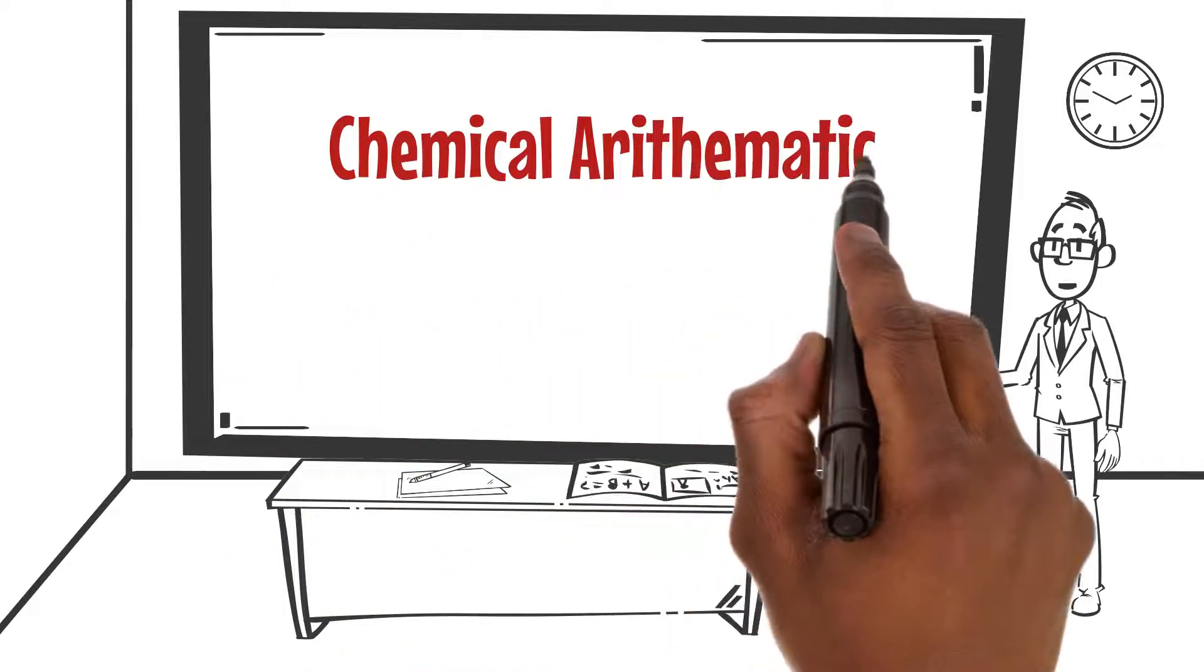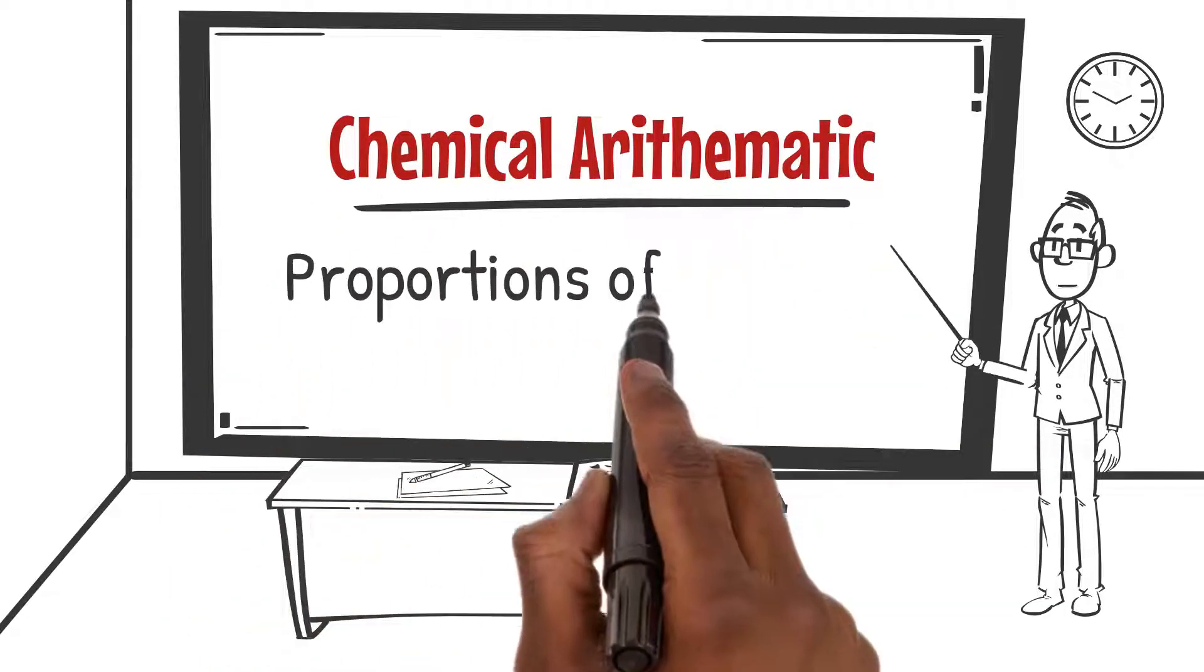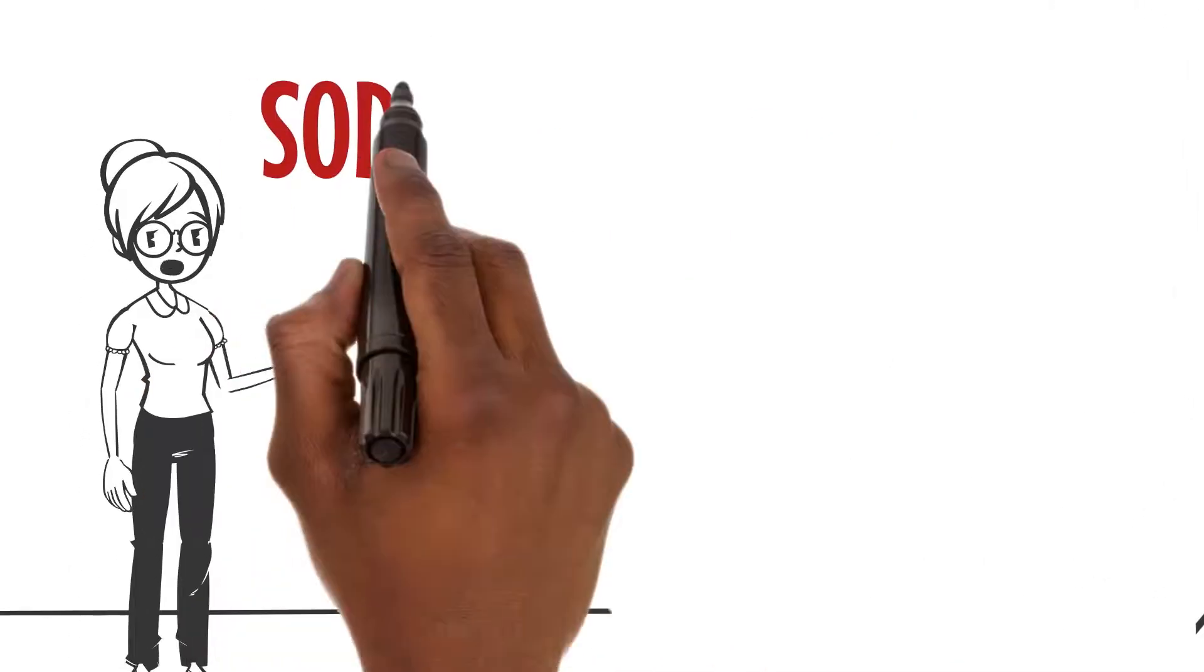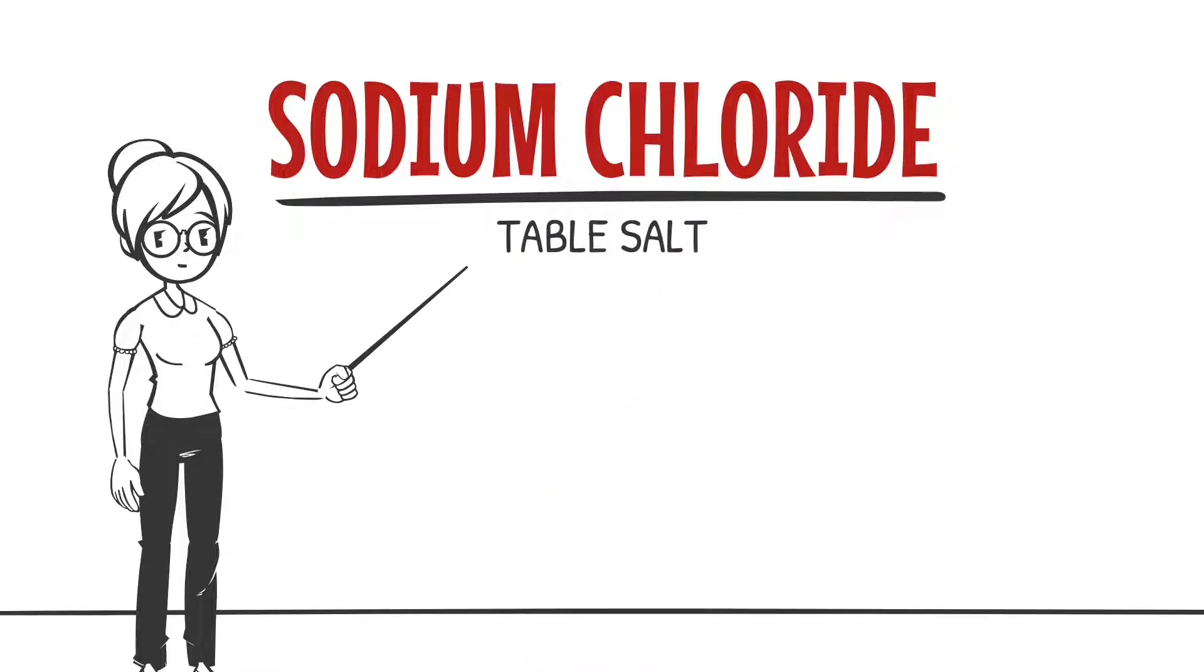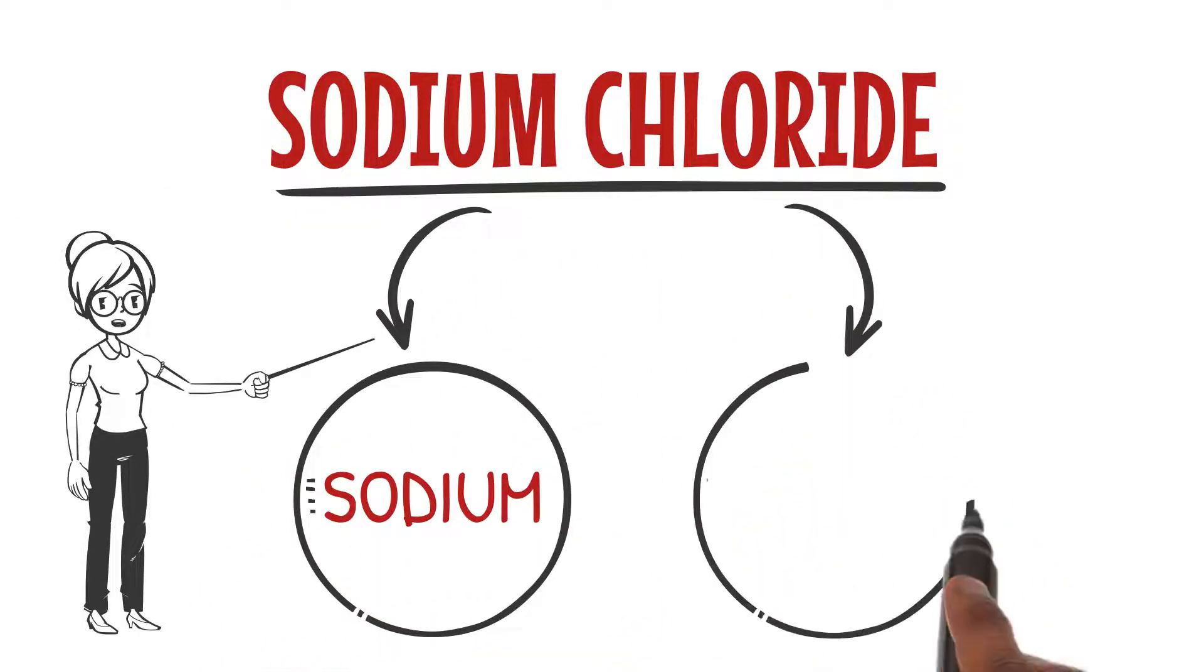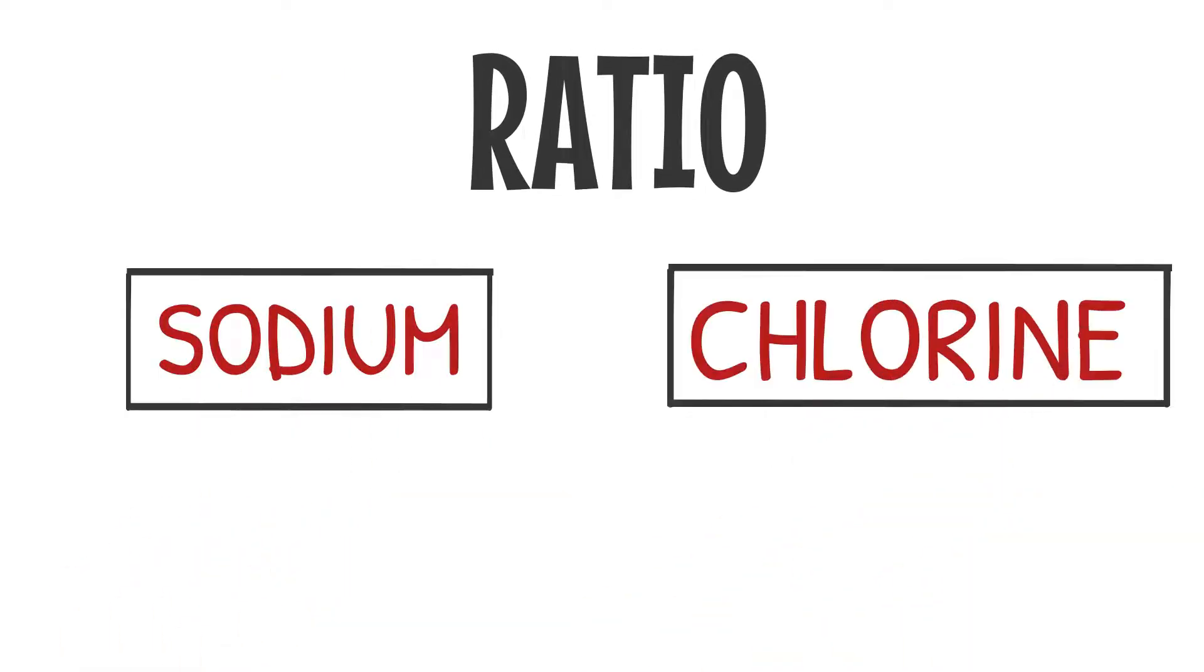It's just a way to understand the proportions of different elements and compounds. Let's take a famous compound, sodium chloride, or simply table salt. It's made up of sodium and chlorine atoms. The ratio of sodium to chlorine atoms is always the same: one to one.